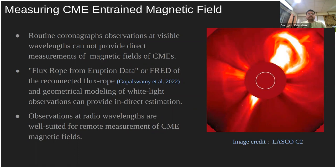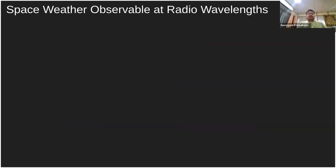People have used techniques such as flux rope modeling from eruption data at lower coronal heights using UV observations, combined with geometrical modeling using white-light observations, to provide indirect estimations of magnetic fields in the CME plasma. However, this indirect estimation is not always correct and cannot always provide local variations of the magnetic field.